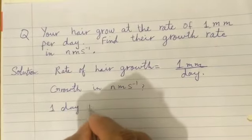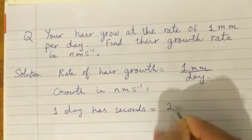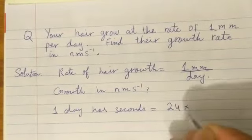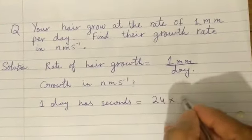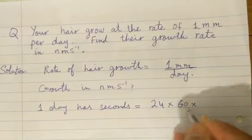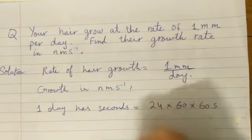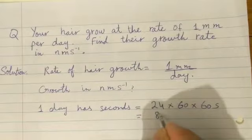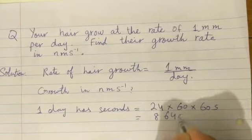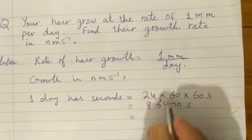One day has seconds. In a day there are 24 hours, one hour has 60 minutes, and one minute has 60 seconds. So we have to change it into seconds. We calculate all of them, then we have 86,400 seconds.